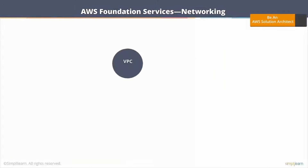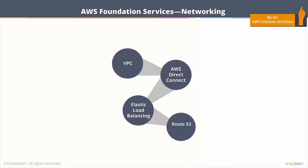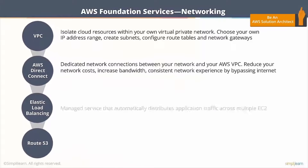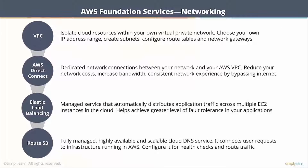When we talk about networking in AWS, essentially we talk about how you can isolate your resources in the cloud. That's a key concern or key requirement for all organizations that are moving their workload to the cloud. How do you do that? You can do it using VPC, the Virtual Private Cloud. We'll take a look at Virtual Private Cloud as well.